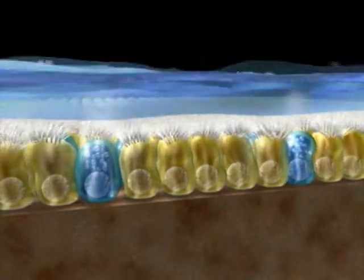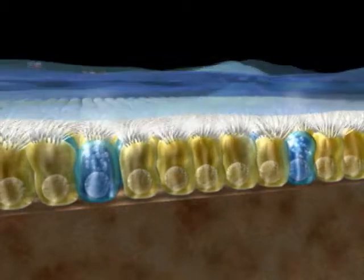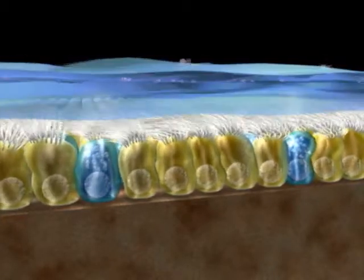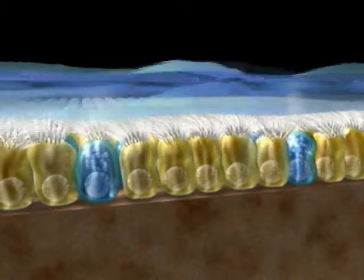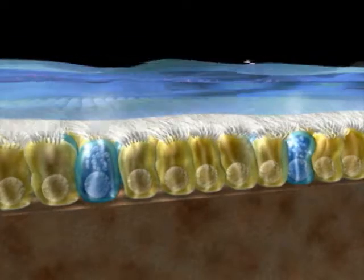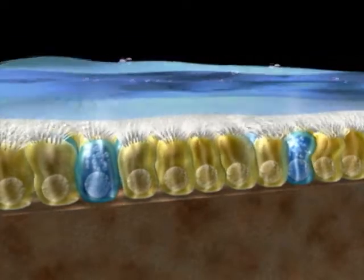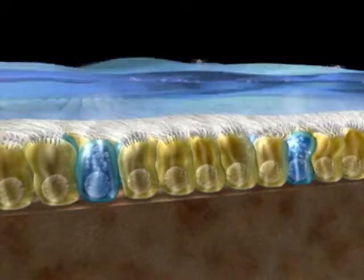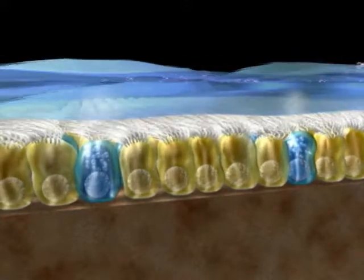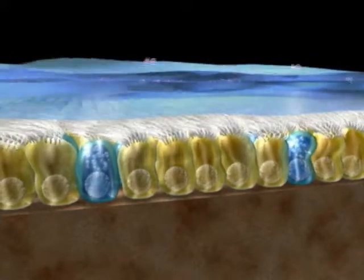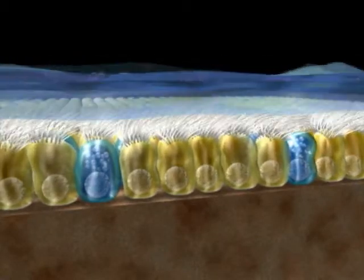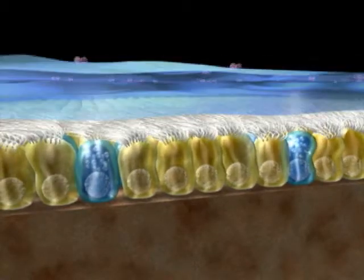Isotonic saline preserves ciliary activity, but solutions above 5% and below 0.2% cause paralysis. The commonest in vivo factor affecting ciliary function is infection. In this state, the epithelium may be damaged to such a degree that the surface cells slough away.